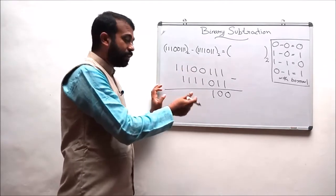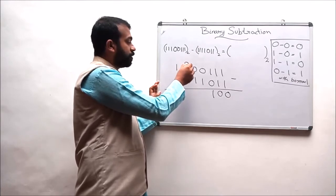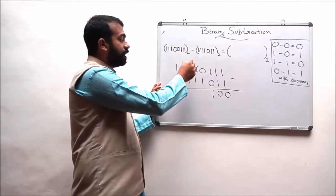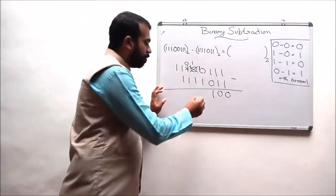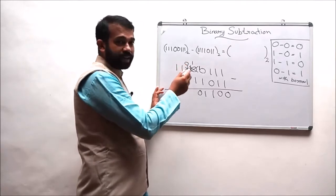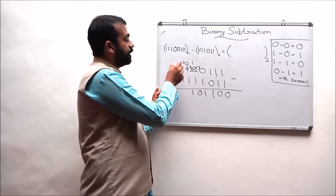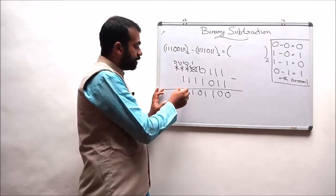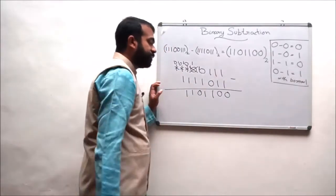We encounter a 0, so we borrow from the next position. Borrowing makes that digit 0 and passes a 1 over. From 1-0, we pass 1 to the current digit; 1-0 minus 1 results in 1 and a 1 is carried over. Continuing: 1-0 minus 1 results in 1; 1 minus 1 results in 0. At the next 0 minus 1, we borrow again — 1-0 minus 1 results in 1. Again at 0, we borrow: 1-0 minus 1 results in 1. The final answer is 1-1-0-1-1-0-0 to the base 2.